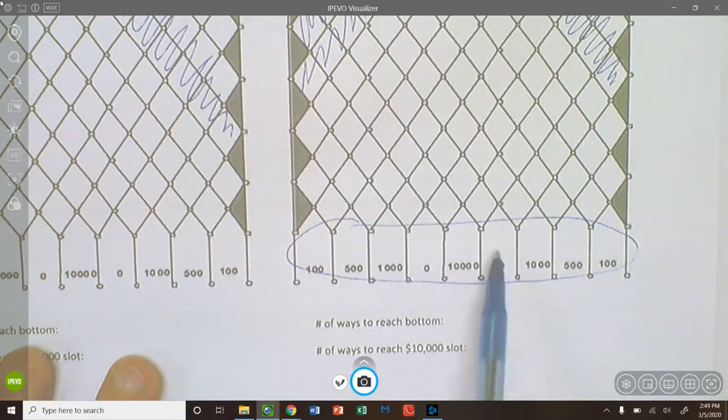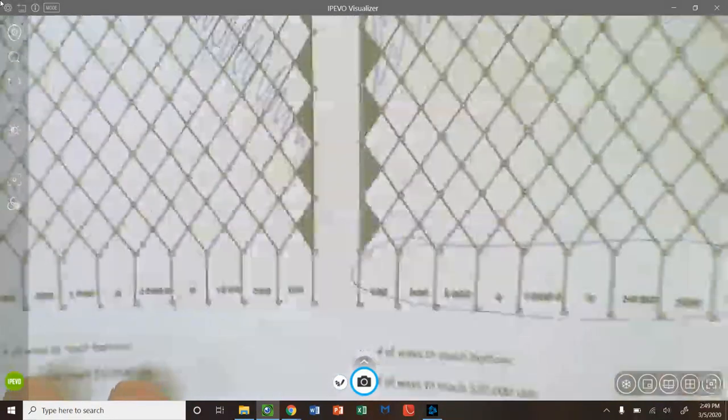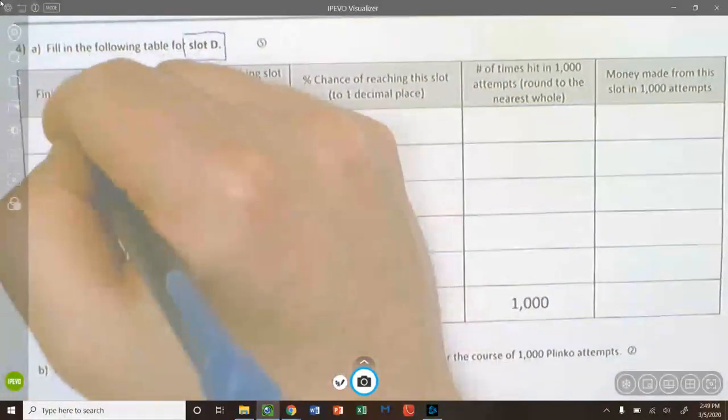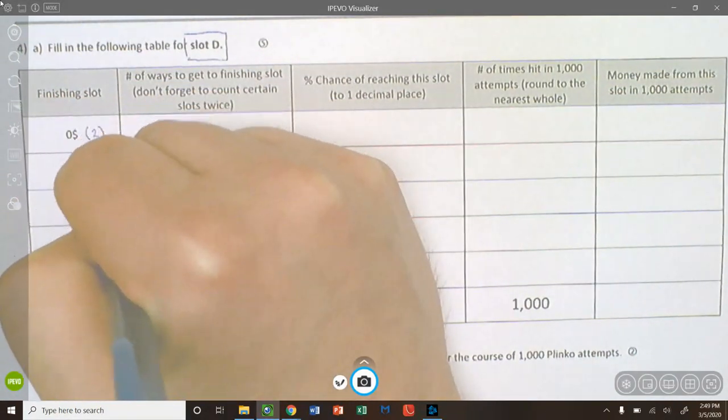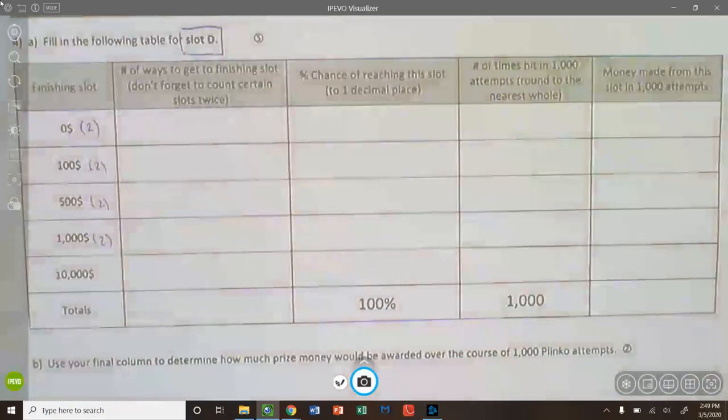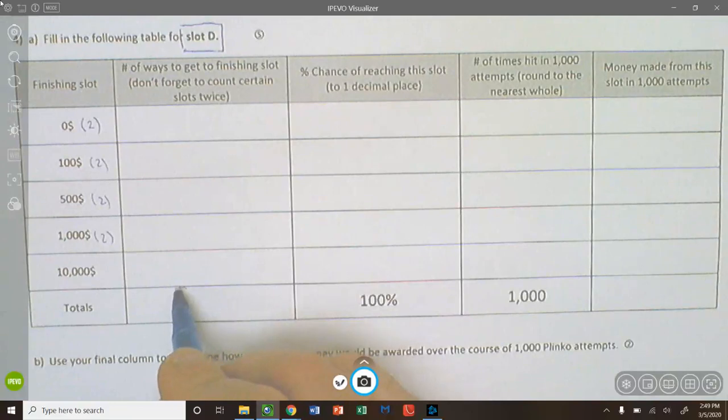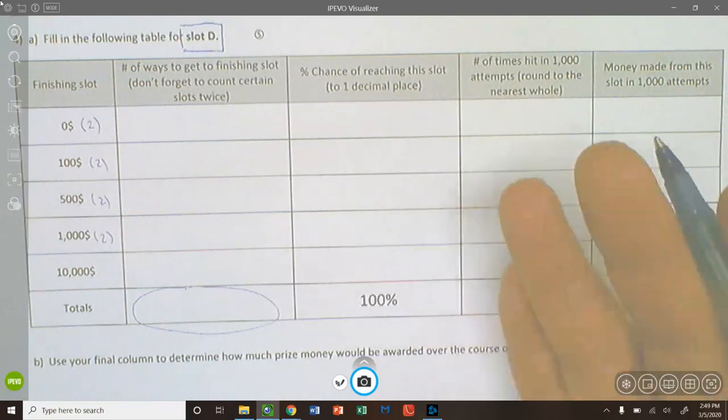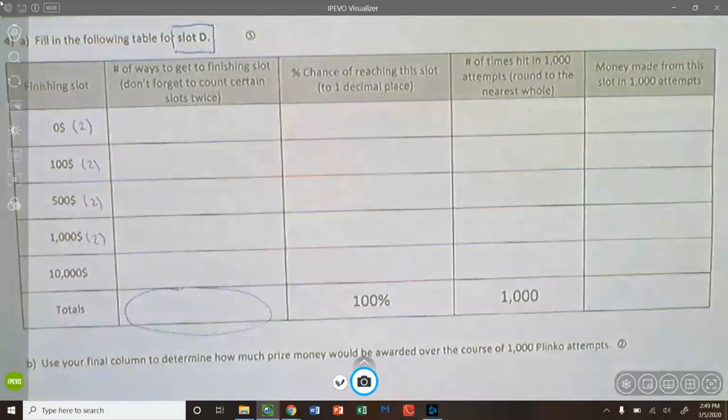And then finally, on the back, what I have you guys doing is doing a little analysis and actually calculating what the expected winnings could be if you play Plinko, per Plinko chip. So I have the five different money totals in the left-hand finishing slot. I want to be clear, too. You guys are only analyzing slot D for this one. So after you do slot D, it's these numbers that you guys will be using in the table.